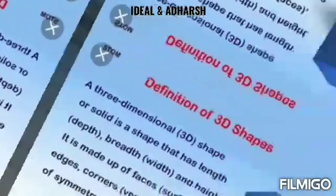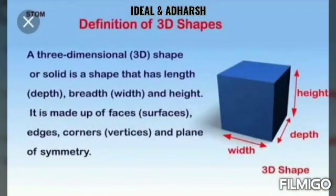In this topic, first we know about 3D shapes. What is 3D shapes? A three-dimensional shape or solid is a shape that has length, breadth and height. It is made up of faces, edges, corners and plane of symmetry.